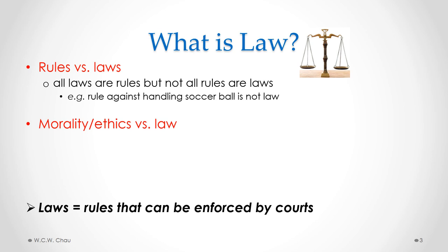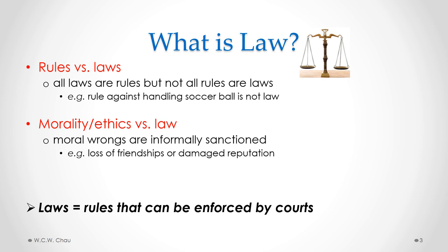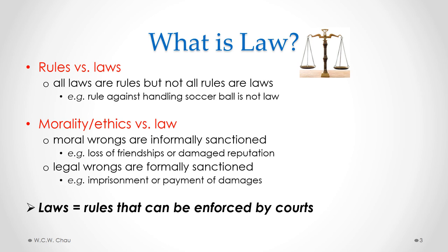With morality or ethics compared to law, when we commit a moral wrong — something that goes against a moral rule a person holds — there are what we call informal sanctions. So if you lie to your friends, you might lose them as a friend or damage your reputation. None of those consequences are specifically spelled out, which is what makes them informal. If you commit a legal wrong and break a law, there are specific formal sanctions. For example, committing a theft could result in imprisonment or payment of a fine.